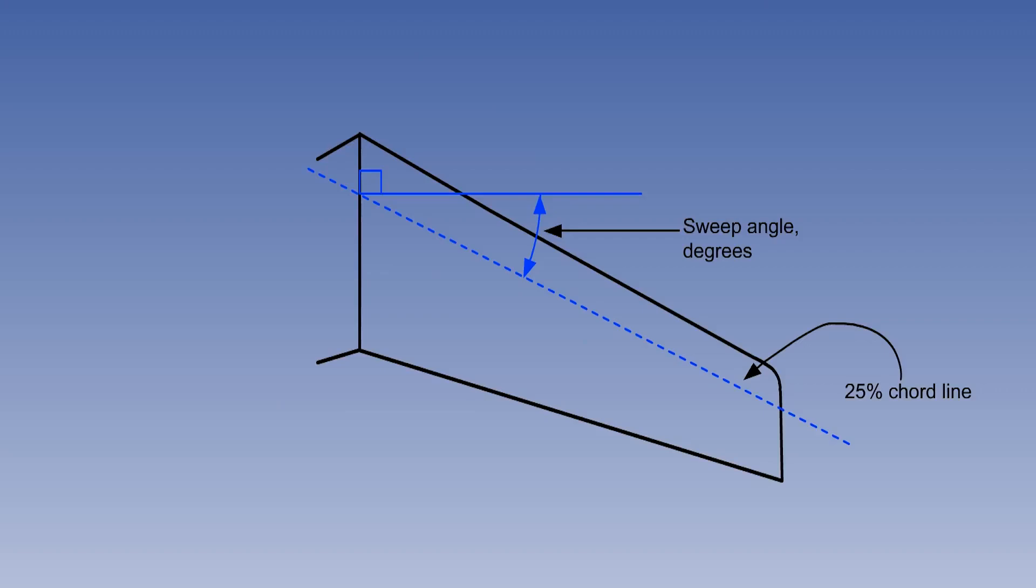For a swept wing, the sweep angle is usually measured as the angle between the line along the wing joining points of 25% cord and a line perpendicular to the root cord or aircraft centreline.